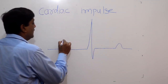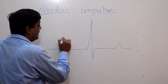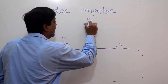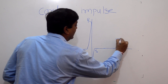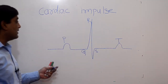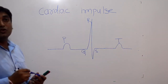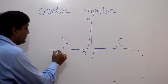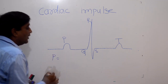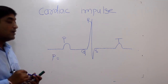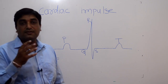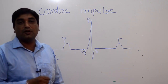It is always P, Q, R, S, and T. Now how can we read this ECG pattern? It is the P wave. This P wave corresponds with the atrial depolarization — that is the contraction of the atrium.